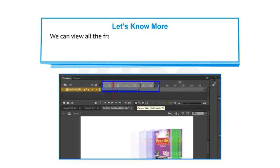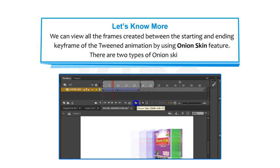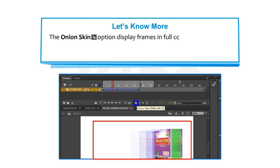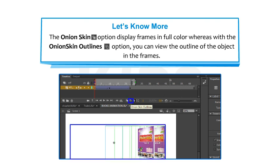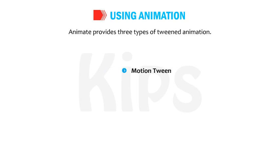We can view all the frames created between the starting and ending keyframe of the tweened animation by using the Onion Skin feature. There are two types of onion skinning. The Onion Skin option displays frames in full color, whereas with the Onion Skin Outlines option you can view the outline of the object in the frames. Animate provides three types of tweened animation: Motion Tween, Shape Tween, and Classic Tween.